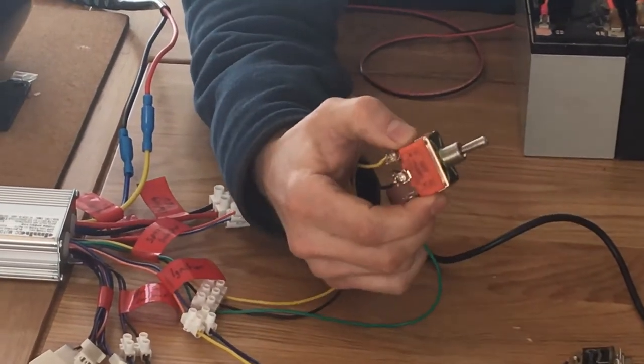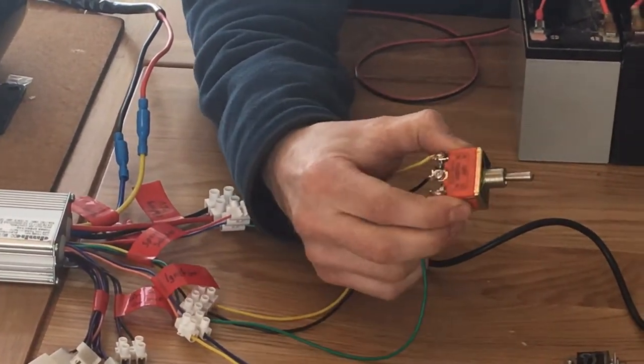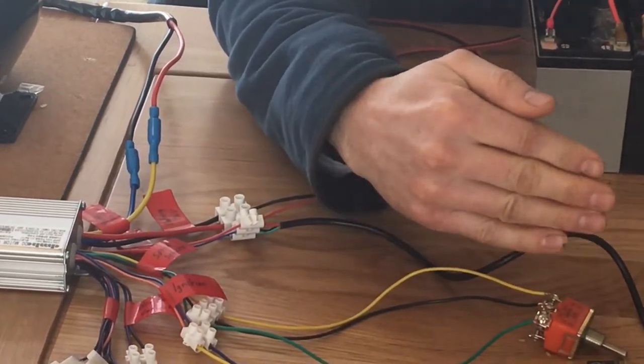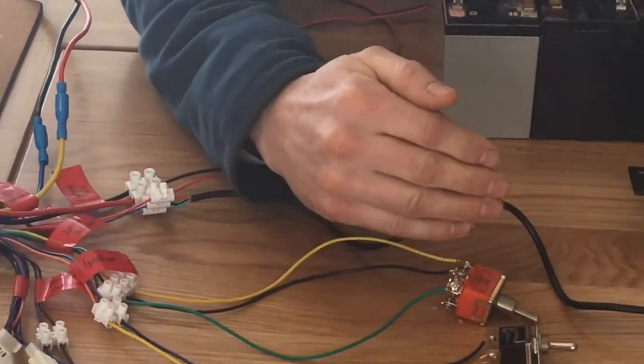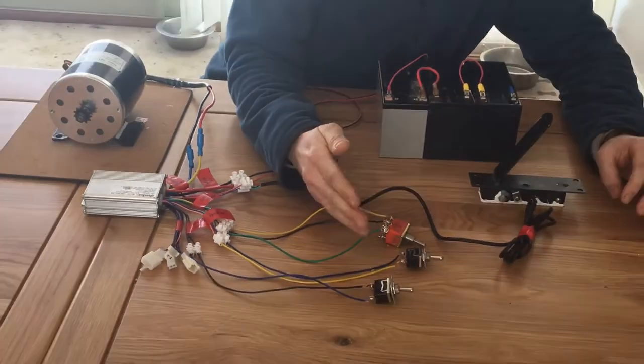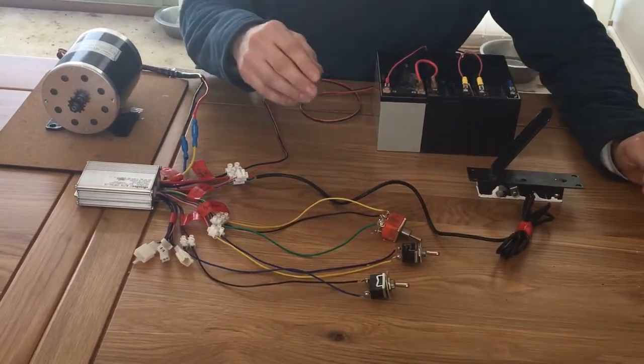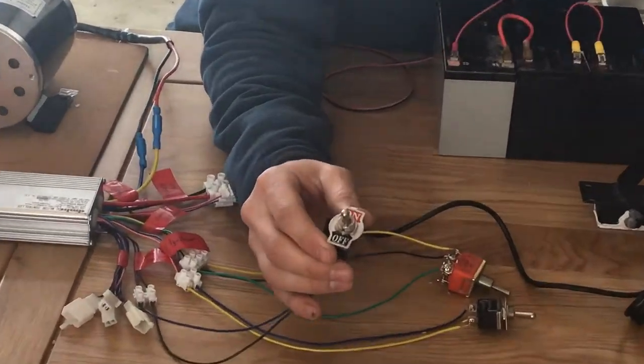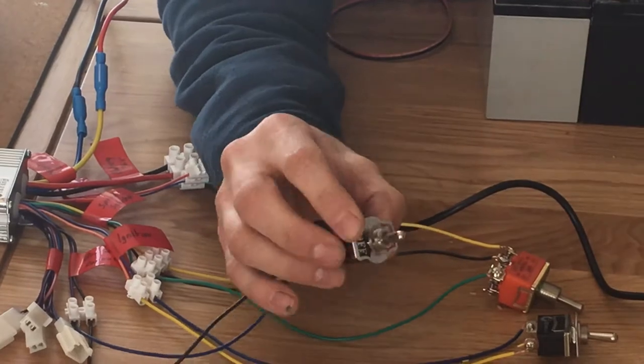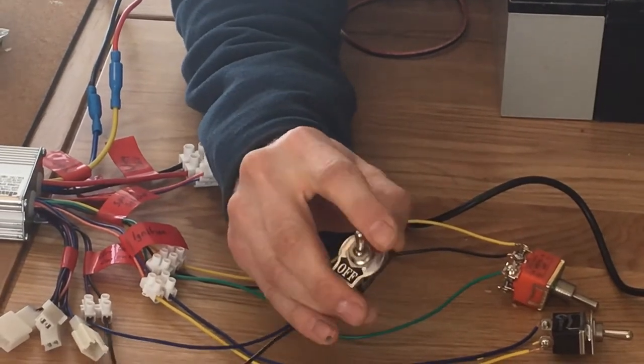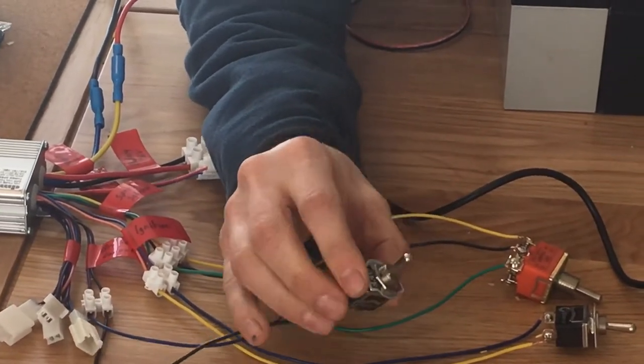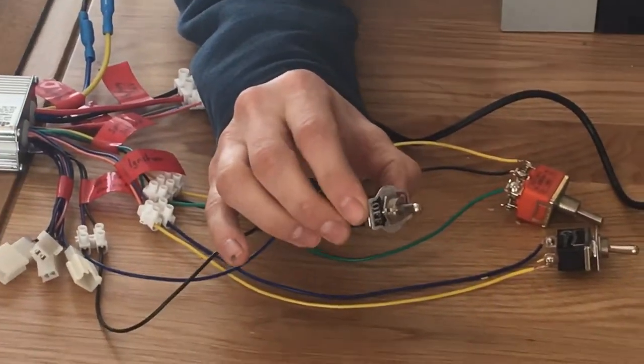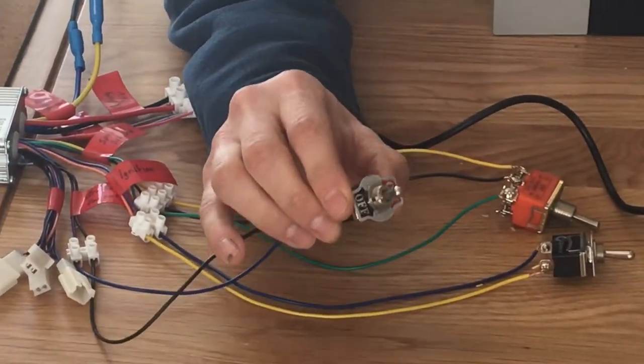This is called a double pole double throw switch, so basically you're changing the contact over from either yellow to green. So that's where that switch works. Now last and probably most importantly, this is the brake cutout switch. I've simulated it by using a normal switch here, but in practice I'll either have a magnetic switch or a little micro switch on the brake pedal.